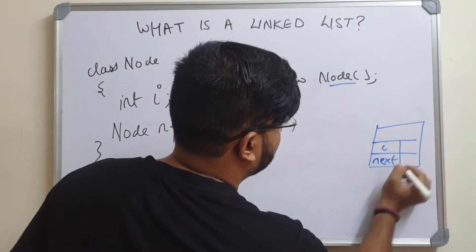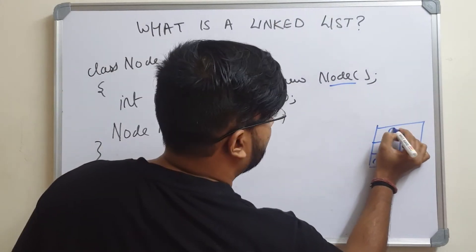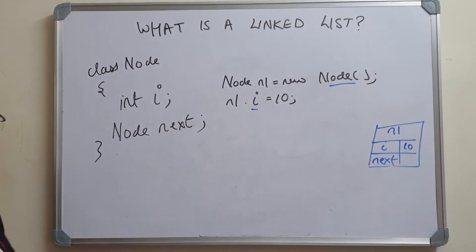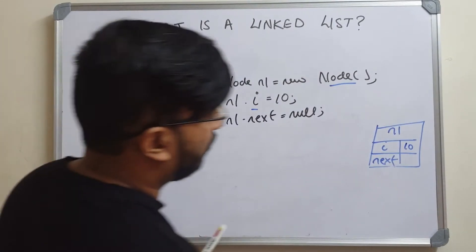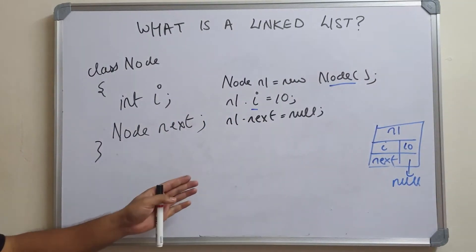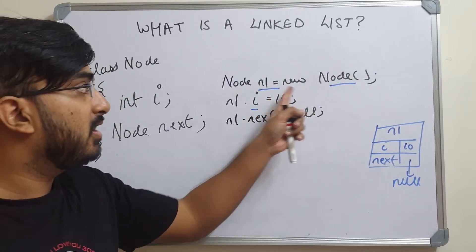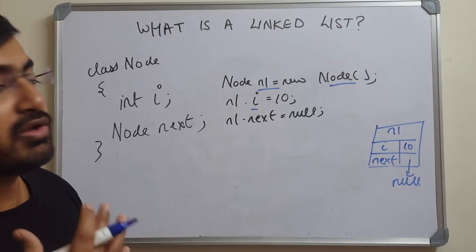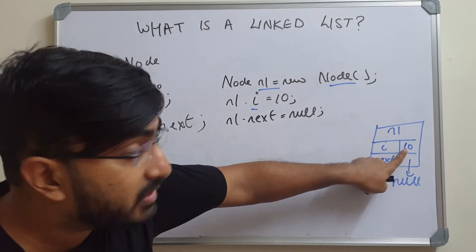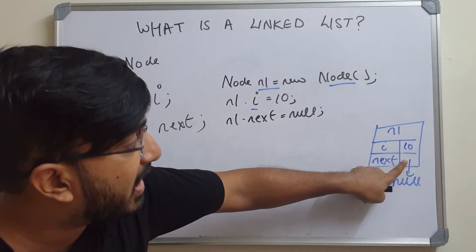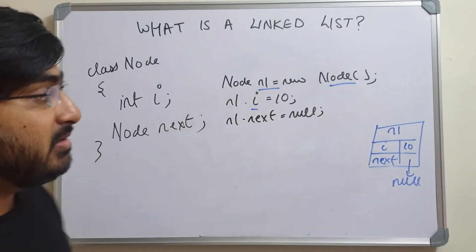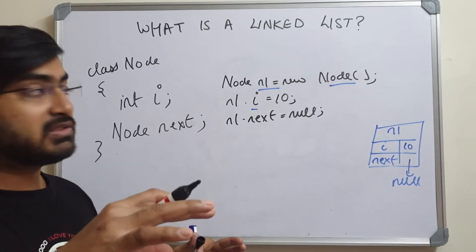In memory, we are creating a space enough to store an `i` and a reference called `next`. The name of this location is n1. So `n1.i` has value 10, and the `next` of n1 is set to null — it points to null. When you create an object, memory is provided with that name. You can think of this memory location named n1 as storing the integer value 10 and a reference of type Node which is currently null.